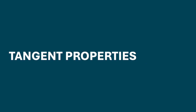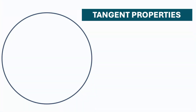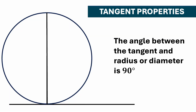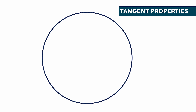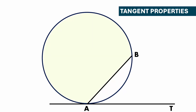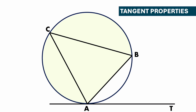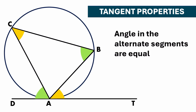Now let's discuss tangent properties. A tangent is a line which touches the circle only at a single point. The angle between the tangent and the radius is 90 degrees. In the major segment, if you draw triangle ABC, the angle between the chord and the tangent equals the angle in the alternate segment. So if AC is the chord and AD is the tangent, then angle CAD equals angle CBA — angles in alternate segments are equal.